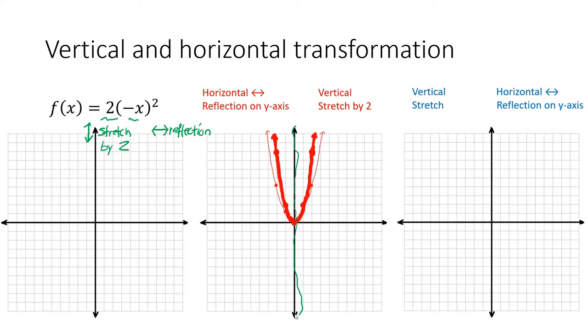Now, backwards. Vertical stretch, here. Notice that the y-values are doubled by a factor of 2. And then do a horizontal reflection. Once again, it doesn't go anywhere. And what do you notice? They are both the same, and they are both correct.